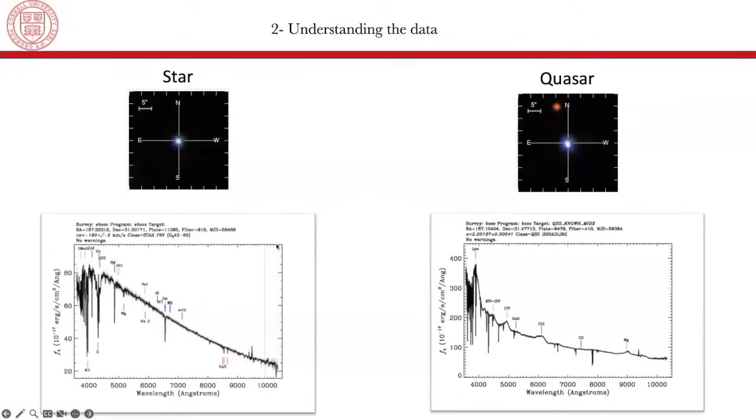So on the bottom, we have the spectrographs of stars and quasars. The signature of stars have these different dips or valleys that we can see in this plot, whereas the signature of quasars have these different peaks that we can see in the picture. So in order to classify stars, quasars, and galaxies, we will use two types of data: photometric data and spectroscopic data.